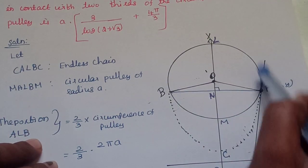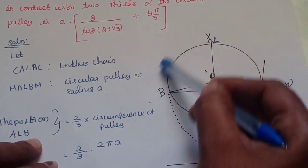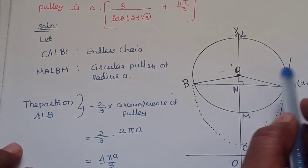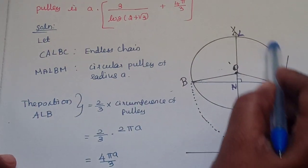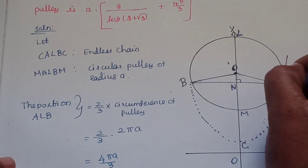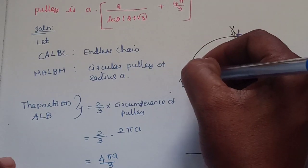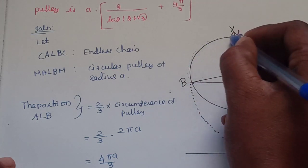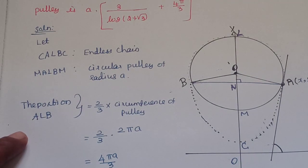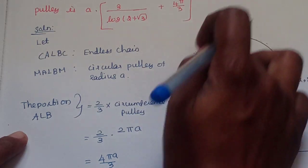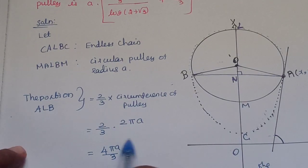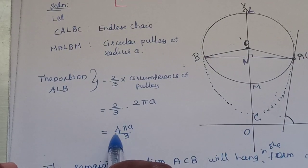The circular pulley is labeled M, A, L, B, M, with radius A. The portion ALB is two-thirds of the circumference of the pulley. The circumference is 2π times the radius, which is 2πA. So the arc length of ALB is (2/3) × 2πA = 4πA/3.